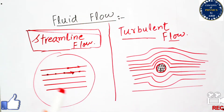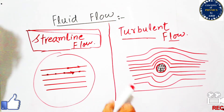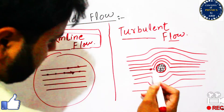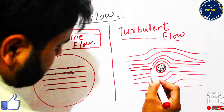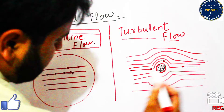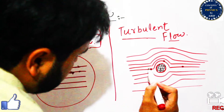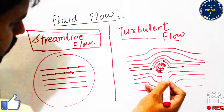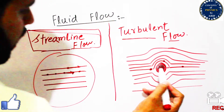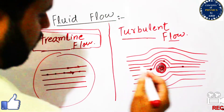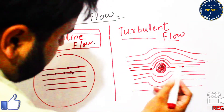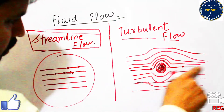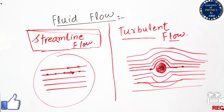Turbulent flow is the flow in which every particle is not following the path of the previous particle. From this expression, one particle is here, another particle is here — they must move in a straight line, but if there is a stone or hurdle between the streamline flow, then every particle will move in different directions and changes its path of motion. This is known as turbulent flow.